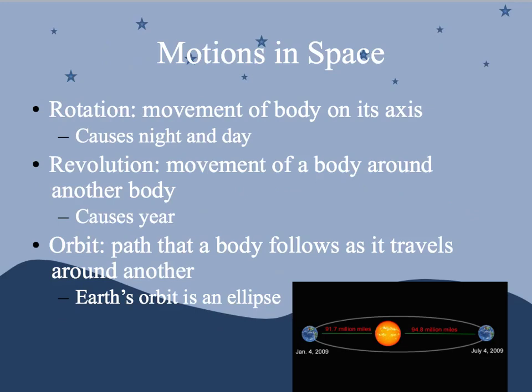Motions that happen out in space: rotation is the movement of a body on its axis — the Earth literally spinning. It causes us to experience night and day. Revolution is when we revolve around the sun, and this causes us to experience our year. Orbit is the path that a body follows as it travels around another. Our orbit is not a perfect circle but an ellipse — almost like a circle that got squished down a little.